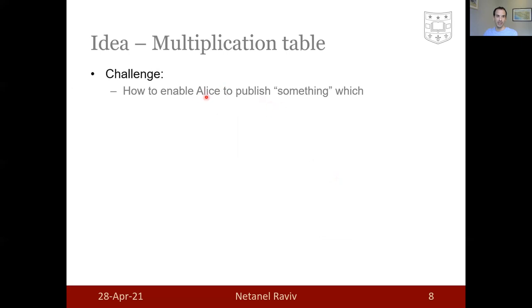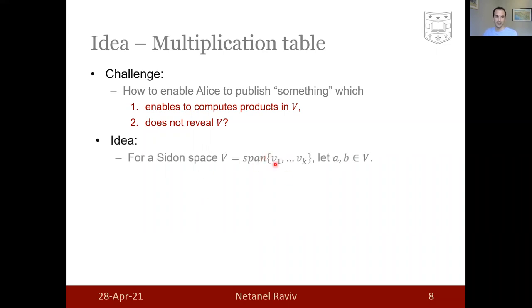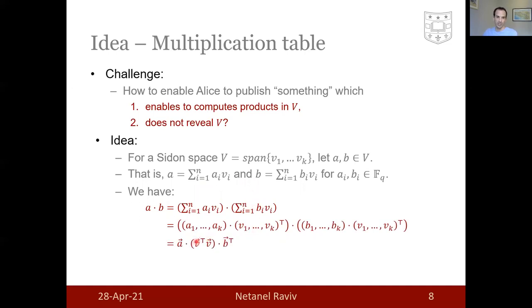The challenge here, I repeat, is to enable Alice to publish something which enables the sender to compute products in V but does not expose V. The idea that we use is as follows. Fix some basis v_1 through v_k for your Sidon space V and observe that for every two elements A, B in it, they can of course be represented as a linear combination of those v_1 through v_k over the base field. However, when we compute the product between these linear combinations, move it to vector form and then move to a matrix form, we see that the so-called multiplication table here arises. This probably doesn't come as a great surprise to many of you that already know that multiplication in finite fields is technically a bilinear form.